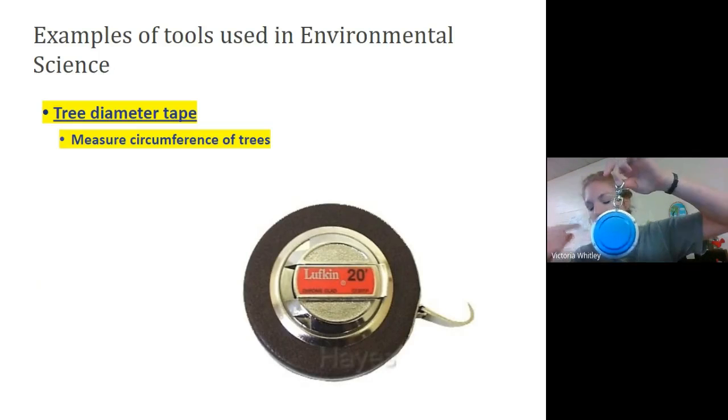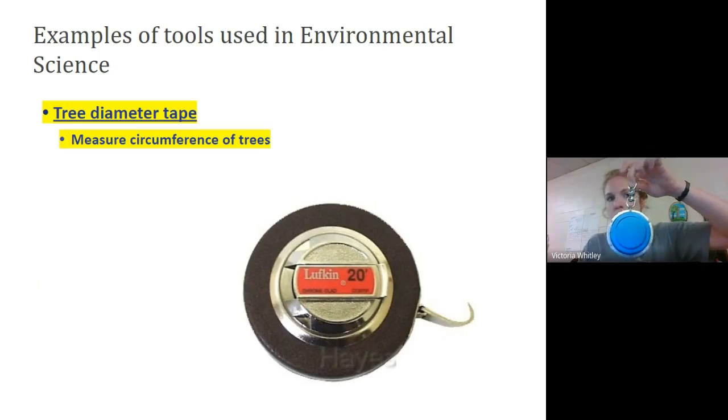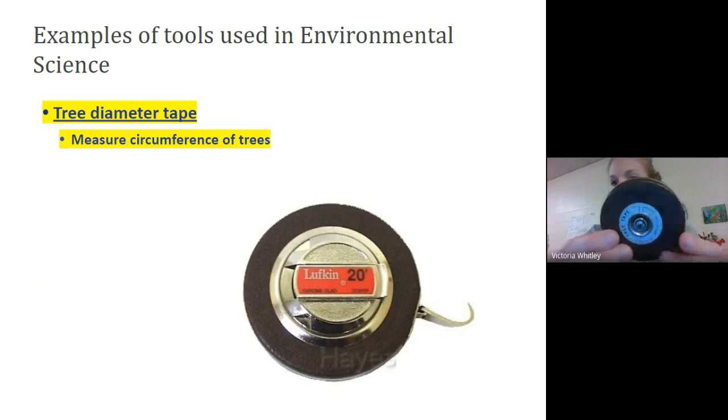This tree diameter tape, this particular one, I have two. Here's one. This one's cool because it has a clip. And so if you're walking through the forest, you can clip it on your belt loop and then it's just very easy access. This one's kind of cool because it's like leather and it's got, this one looks more like the one on the screen. And it kind of winds. So you could, and it has a hook. So this one has a hook that you could hook onto the tree. It's actually pretty sharp. So it hooks into the bark and you just measure around it like this.